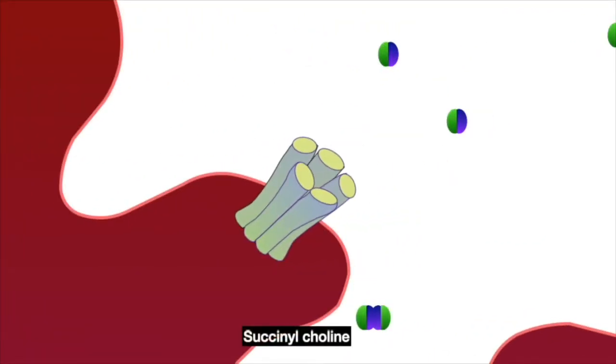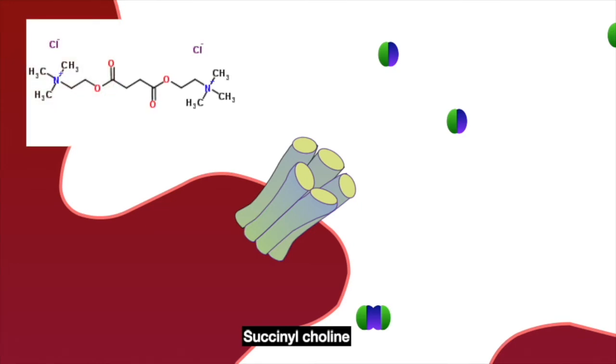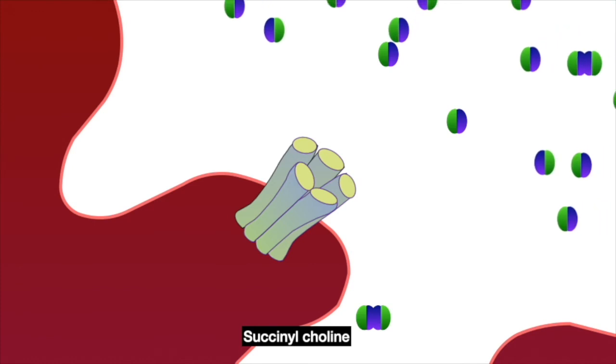Now we shall go to depolarizing blockers, the classic example being succinylcholine. The compound consists of two acetylcholine molecules that are linked by their acetyl groups. It can also be viewed as a central moiety of succinic acid with two choline moieties, one on each end.